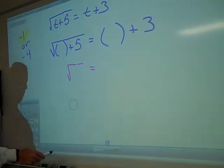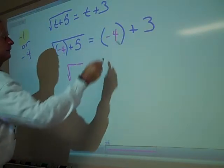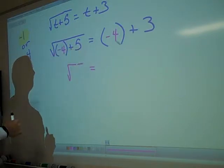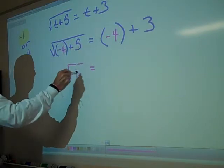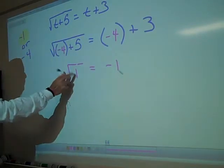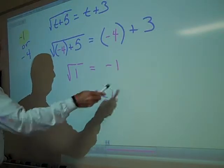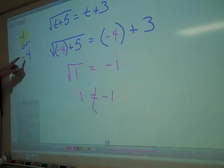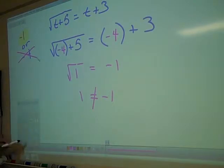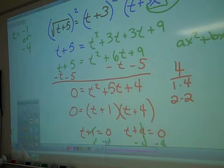Let's plug in a negative 4. We could pretty much stop right here, couldn't we? Because what's two minus three? Negative. Can you ever have a radical that equals a negative number? No. But we can still do it. What's negative 4 plus 5? 1. And what's negative 4 plus 3? Negative 1. What is the square root of 1? 1. Does 1 equal a negative 1? No. So is negative 4 an answer? No. So what is the solution to this problem right here? Just a negative 1.